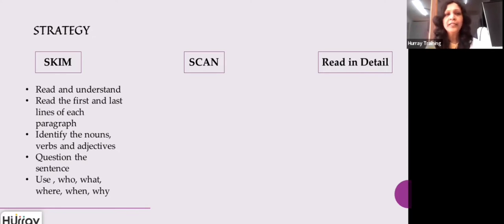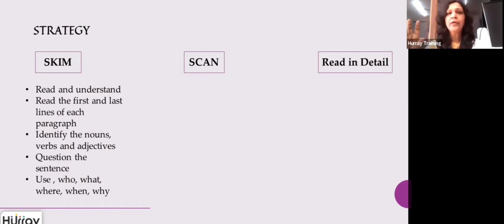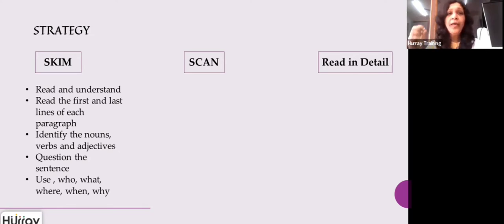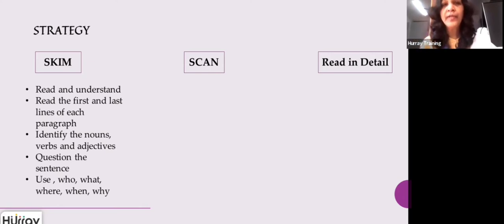Also, question each sentence in the True, False, Not Given questions. Ask yourself: who is this talking about? What is the subject — a person, place, or thing? Where is this located? What is the setting? When did this happen — the time or duration? And why — what is the purpose or reason? Ask yourself these questions and underline the keywords. When you underline, it helps you to focus.